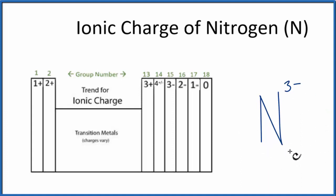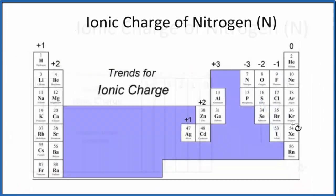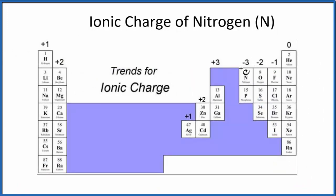We can be more specific looking at the trend for ionic charge. We can see that nitrogen is 3 minus. On this table they have the minus charge before the 3, but traditionally we write it as 3 minus, not minus 3.